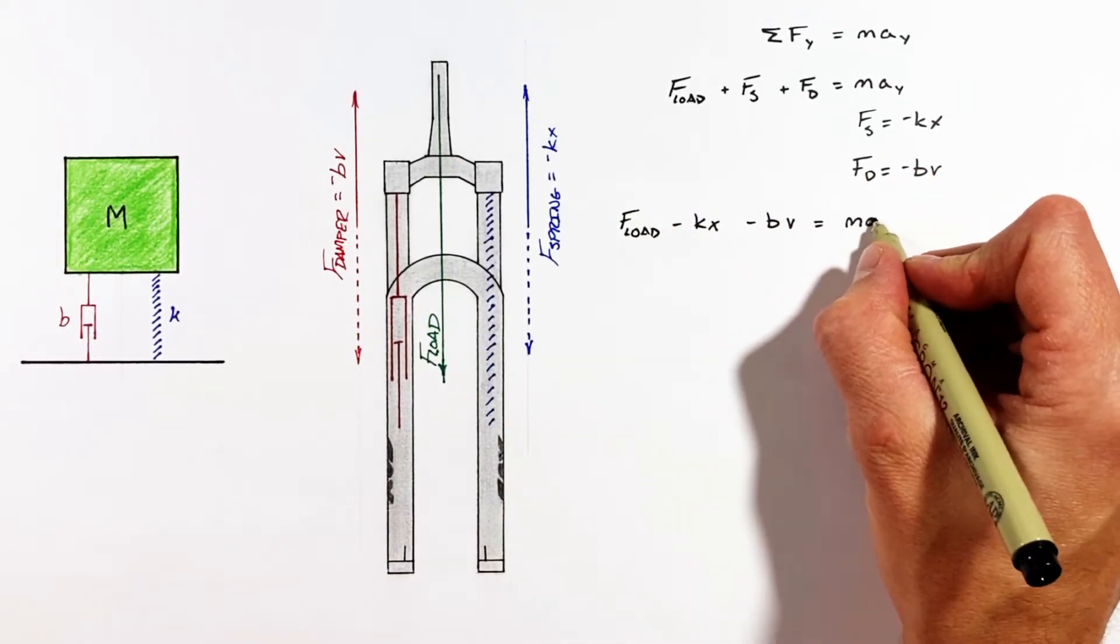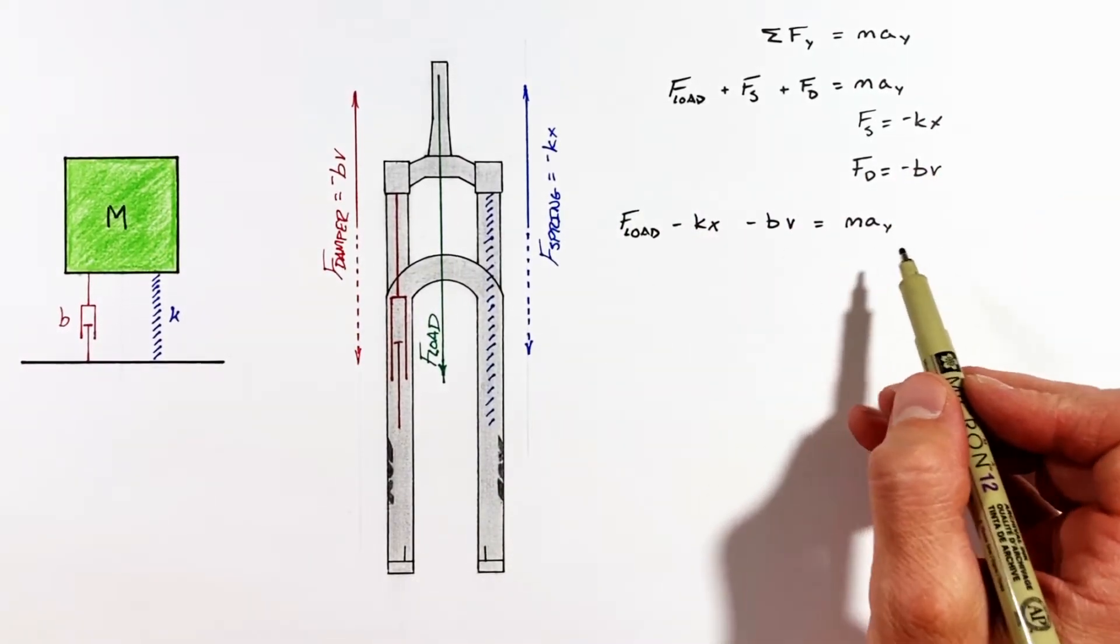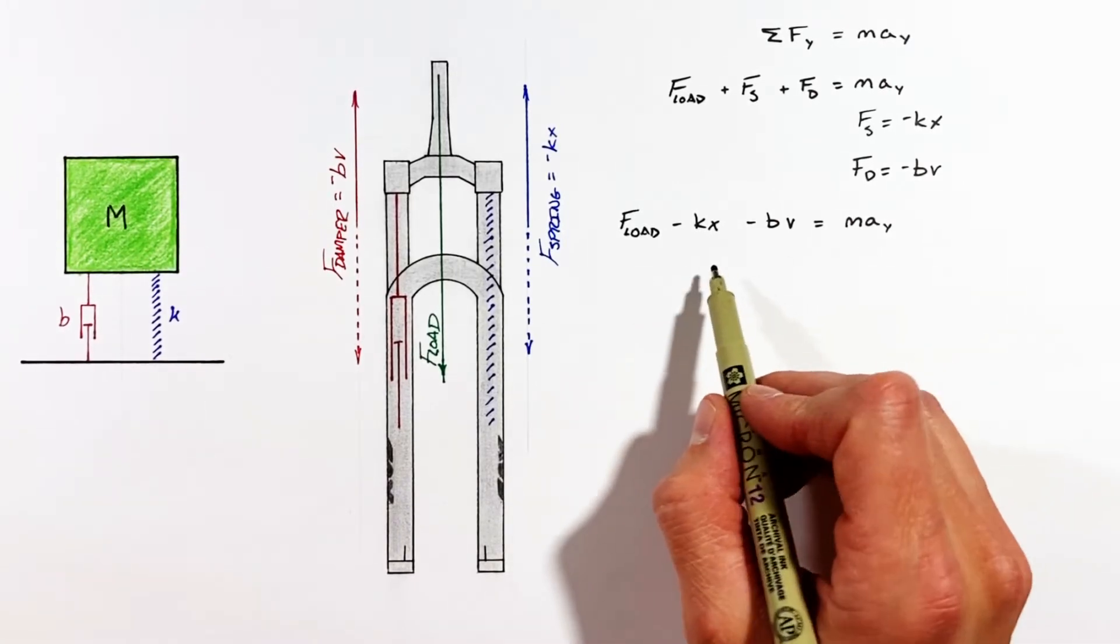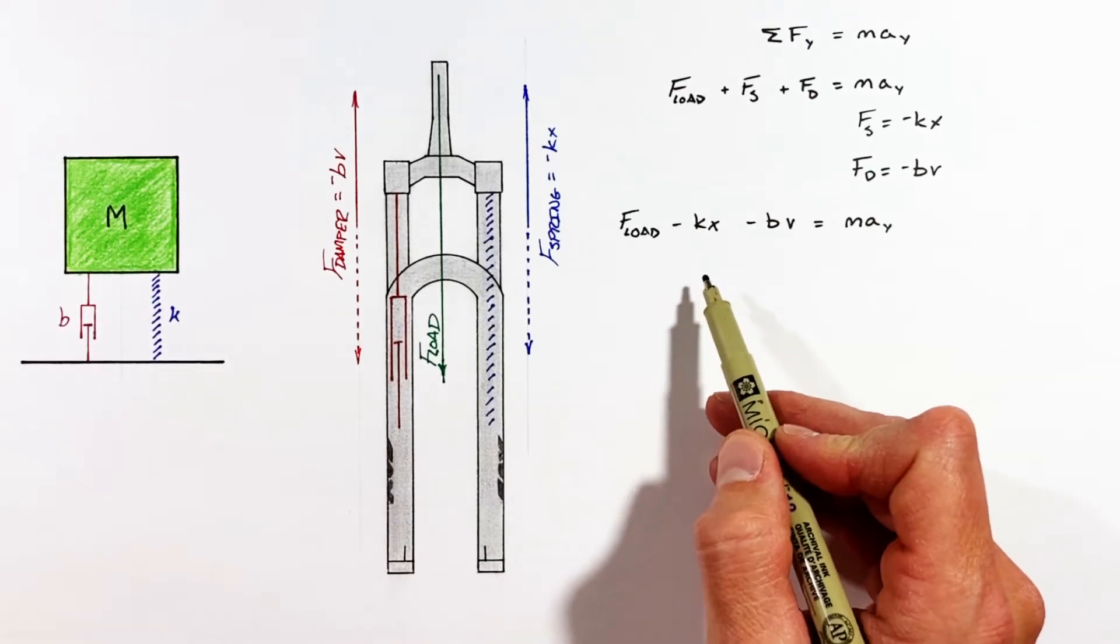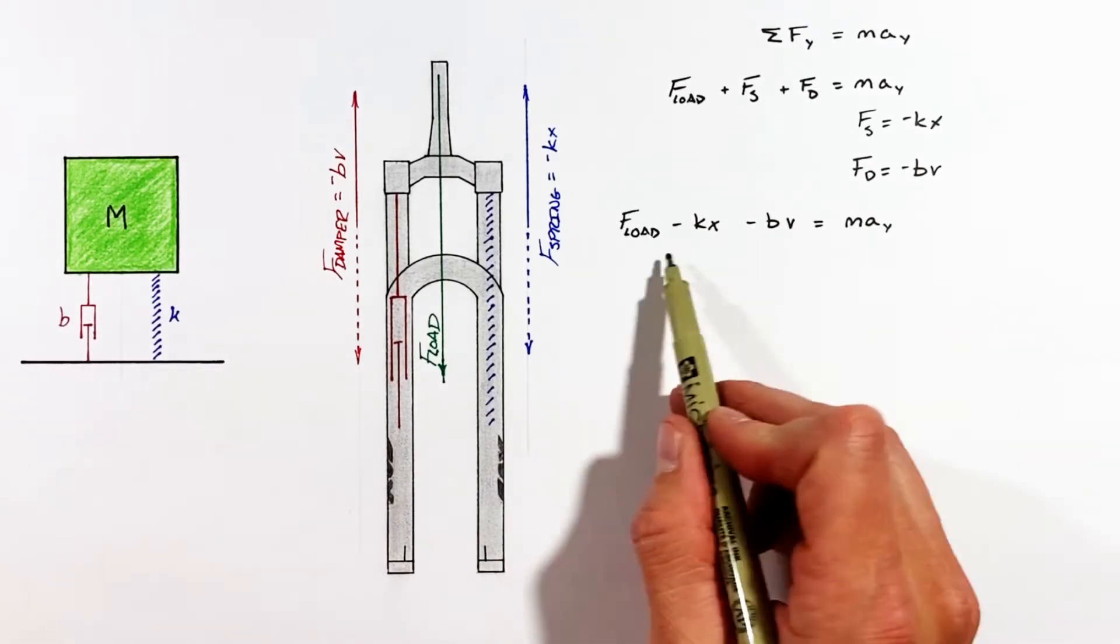Now up till now everything we've done has been physics, but we've reached the limit of how far basic calculus or algebra can take us. The problem is position, velocity, and acceleration are all related through time, but there's no time in this function to tie everything together.